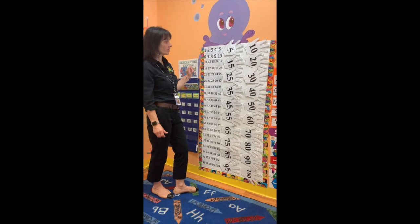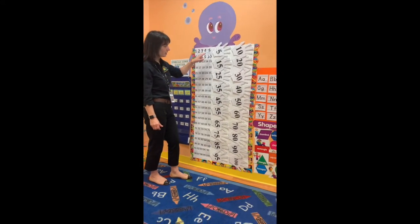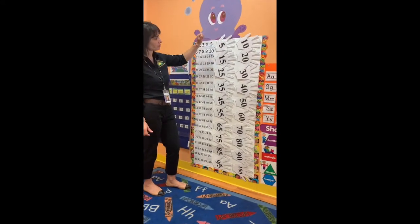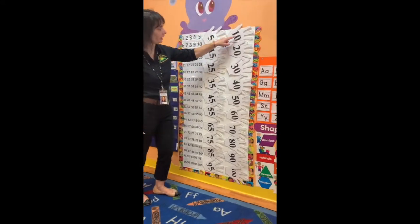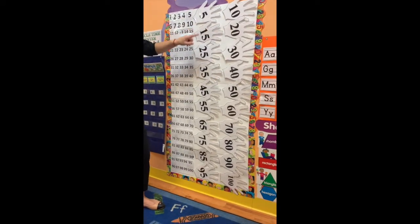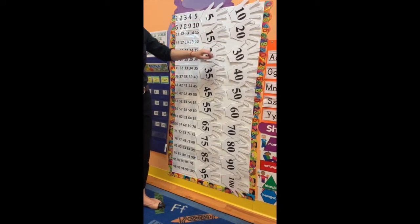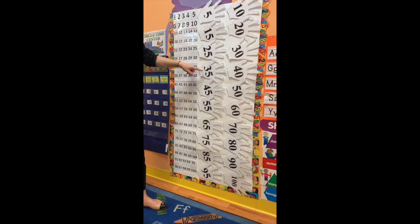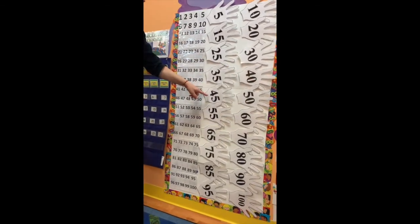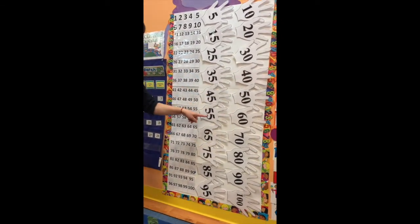And we're going to count to one hundred. Five. Count with me: ten, fifteen, twenty, twenty-five, thirty, thirty-five, forty, forty-five.